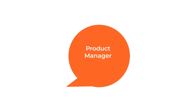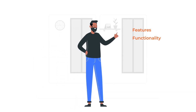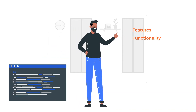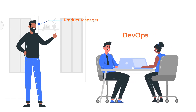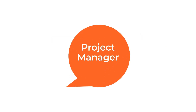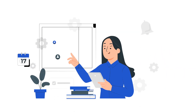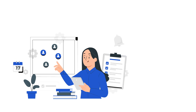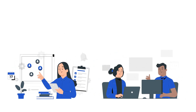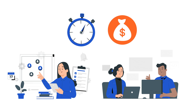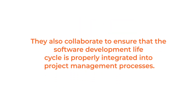Product managers are responsible for determining what features and functionality should be included in a product. DevOps works closely with product managers to ensure a thorough understanding of the product vision and that the product is built and delivered as efficiently as possible. Project managers, on the other hand, are responsible for planning and executing projects. DevOps works alongside project managers to ensure that projects are completed on time and within budget, and collaborates to ensure that the software development lifecycle is properly integrated into project management processes.